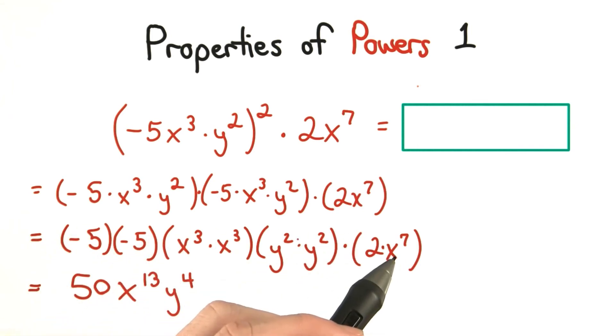For the base of x, I simply add the exponents together. 3 plus 3 makes 6, and 7 makes 13.